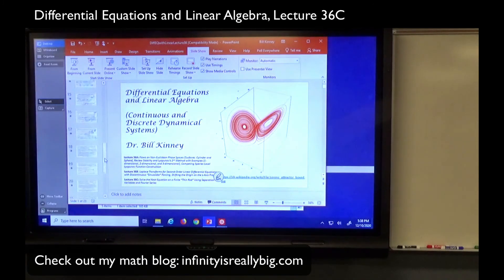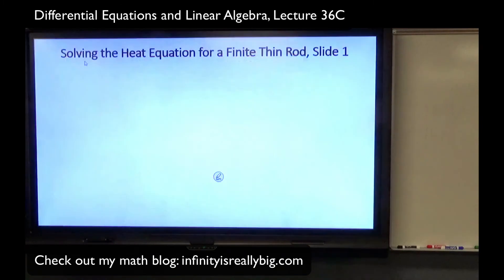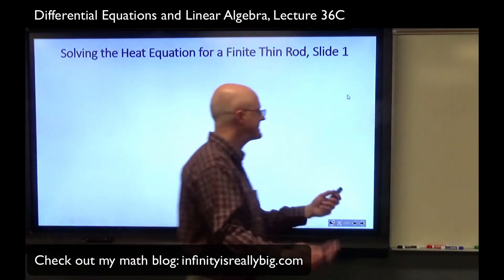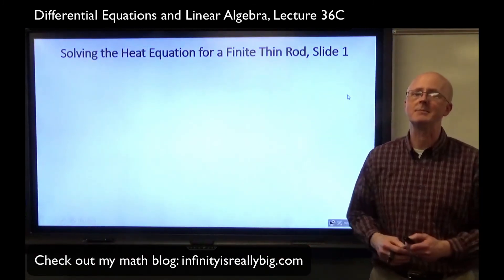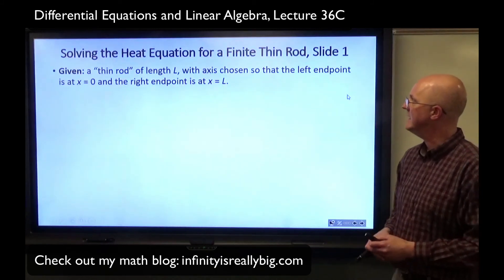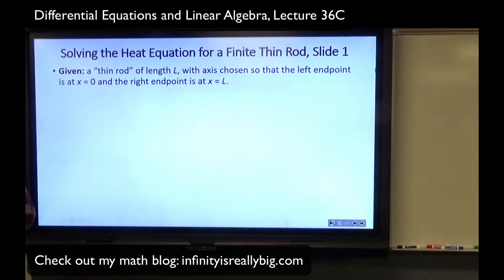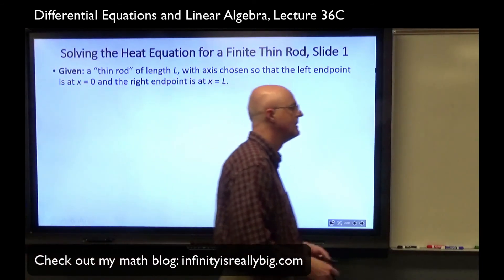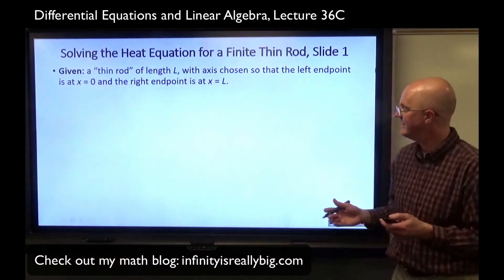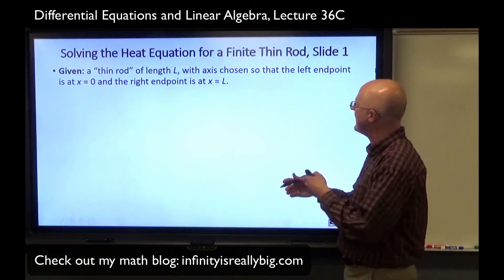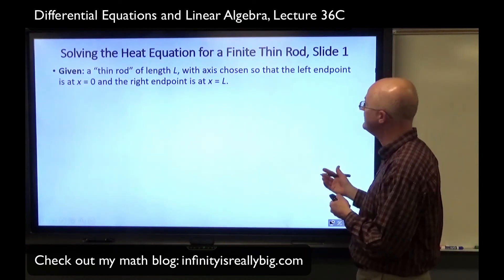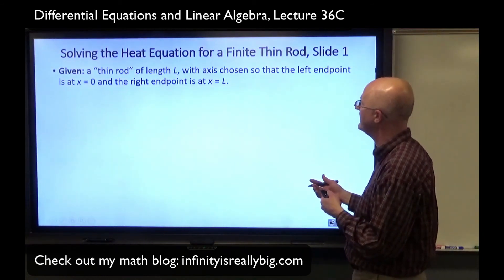We're going to consider a relatively simple example, a relatively simple model. We need to make some assumptions to keep things simple. We're given a thin rod of length capital L. I could have picked a specific number for capital L, but I decided to leave it as unspecified. And its axis is chosen so that the left endpoint is at x equals 0 and the right endpoint is at x equals L.